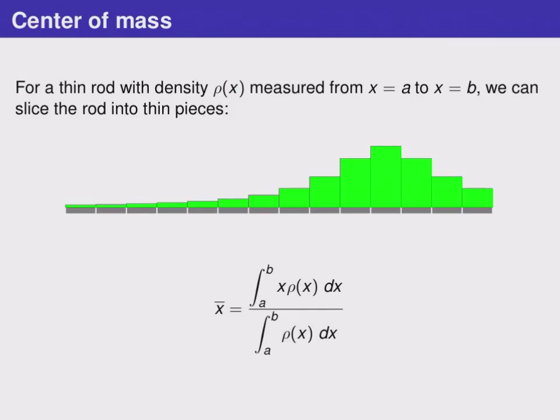We divide by the integral of rho of x, which is exactly the formula for the total mass that we had before. So here we're dividing the weighted location of the masses by the total mass.